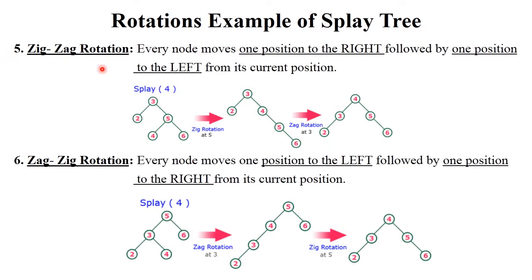Next is zig-zag rotation — zig means right and zag means left, so first perform right rotation then left rotation. In this example, first perform zig rotation on node four — single right rotation: four moves here, five is here, and six is here. Now perform zag rotation — left rotation on four: four goes on the left side, three is here, and two is here. Finally this splay tree is generated and four becomes root of the tree.